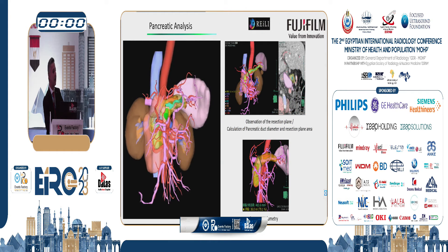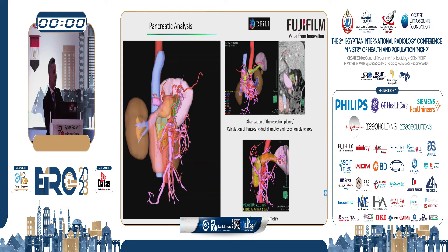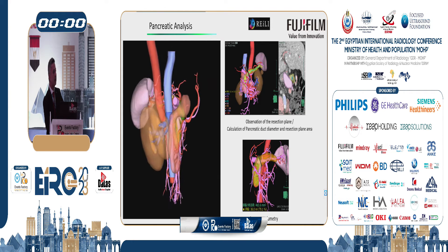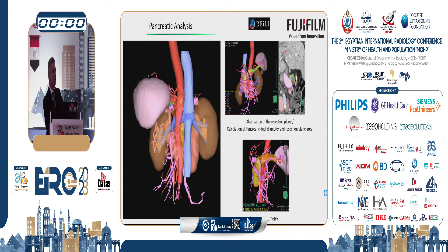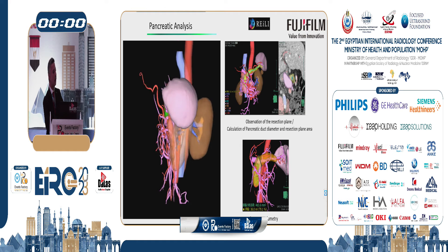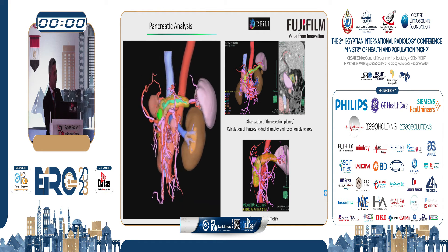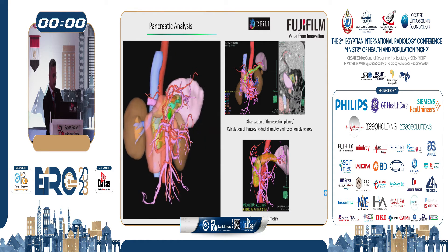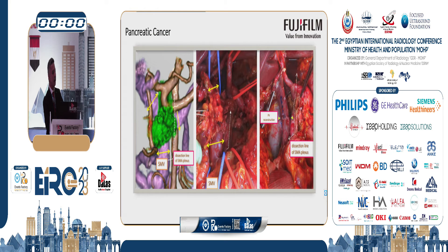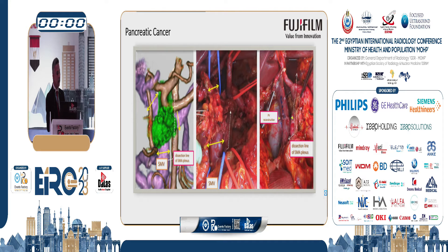Another module is the pancreatic analysis. Synapse 3D is able to detect, separate, segment, and extract all pancreatic lesions or the pancreatic body, as well as the splenic and venous structures — including the pancreatic vein and artery — and simulate surgical planning. Based on artificial intelligence, Synapse 3D can determine and measure the volume of pancreatic cancer, detect its stage and nature, and differentiate whether the cancer is malignant or benign.